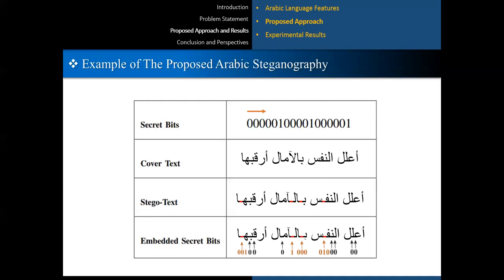The same thing happens to the next letter Alif, where we add a zero because we do not have the sequence 001. The algorithm then moves to the next character Alif, which represents the ending letter of the current word and so it will be skipped. Up to this point, we have only hidden the first two bits, 00, of the secret data. The next character in the second word is Alif, so it will be ignored. After that, the algorithm moves to the next letter Alif, and since no 001 pattern is requested, we use this position again to hide another zero bit.